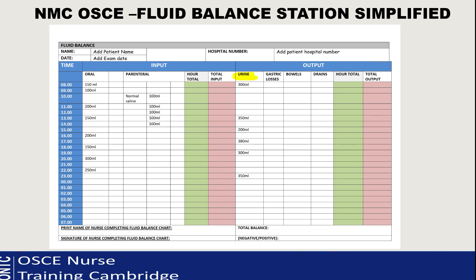Next step is to go to the output side of the chart and add all the urine in the correct place. Normally they don't give you anything for drains or stomach content like vomiting - I've not seen that in the exam. So it's normally just urine output. Just take all the information from your summary sheet and put it correctly in the urine column, corresponding to those hours shown on your summary sheet.